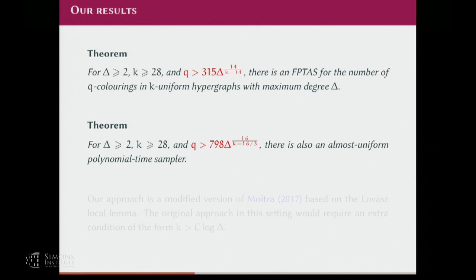Somewhat interestingly, in these regimes you cannot do self-reducibility. In normal coloring, the condition is something like Q/delta at least some alpha, and when you pin vertices one by one — if a neighbor of a vertex got pinned, you effectively remove one color, giving a list coloring — so Q-1 over delta-1 will still be at least alpha. These properties are preserved under self-reductions. But here, because Q is much less than delta, you cannot afford to do this. So self-reducibility doesn't hold anymore, and we need extra work to get an almost uniform sampler, with somewhat worse constants.